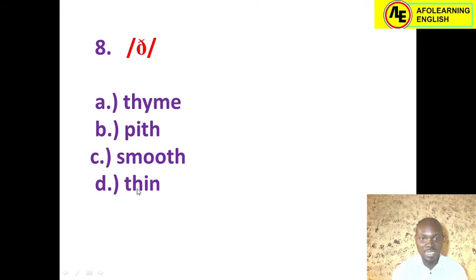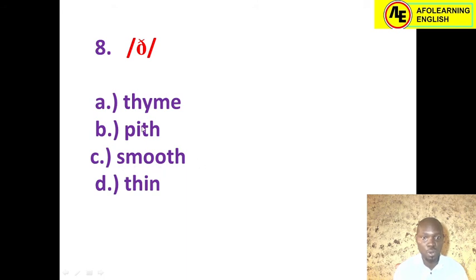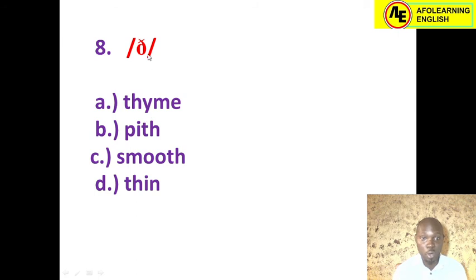Number eight: the voiced dental fricative /ð/. We treated the voiceless /θ/ in 2017; here we want the voiced version /ð/. Both are represented by TH but one is voiceless and the other voiced. The only option with the voiced /ð/ is 'smooth.' Another option 'time' — the TH is pronounced as /t/, it's an alveolar plosive, not a dental fricative. 'Peak' — voiceless, not what we need. 'Thin' — also voiceless /θ/. The correct answer is option C: smooth.